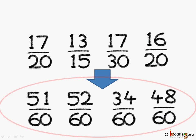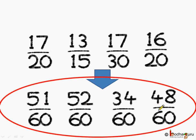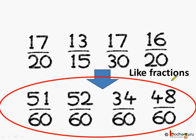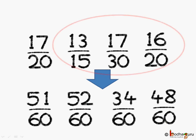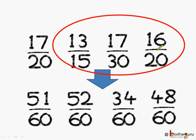All these fractions — 51 by 60, 52 by 60, 34 by 60 and 48 by 60 — have a common denominator of 60. Such fractions are called like fractions. On the other hand, fractions like 13 by 15, 17 by 30, and 16 by 20 all have different denominators, so they are called unlike fractions. Understood?